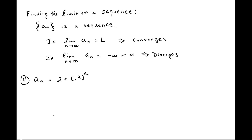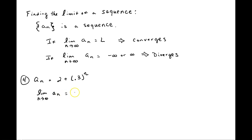Instead of the variable x, we're going to be looking at n and determining how a particular recursion formula behaves. So let's take a look at this first one: a sub n equals 2 plus 0.3 to the power n. What I'm going to do is take the limit as n goes to infinity of a sub n — that's the limit as n goes to infinity of 2 plus 0.3 to the n. So, what happens when you take something really small and raise it to some infinite power?